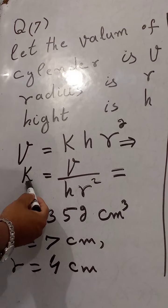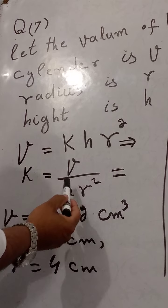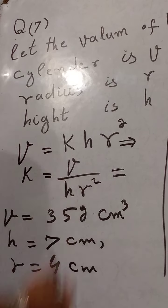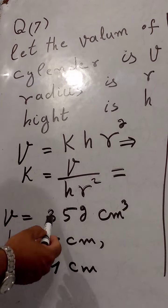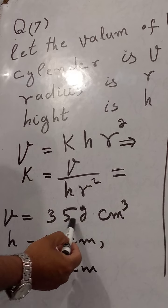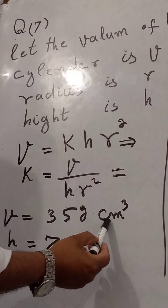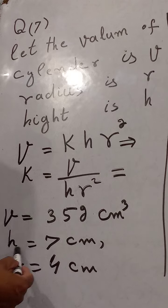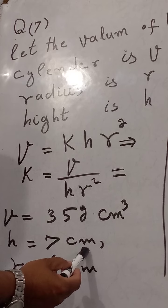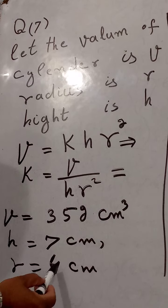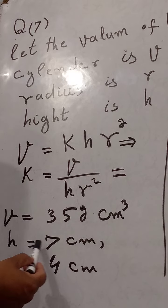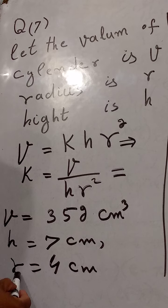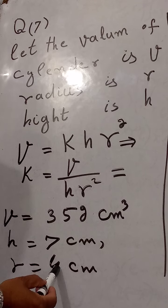From this, K is equal to V divided by H R square. Volume is given which is 352 cm cube and height is given which is 7 cm, and radius of cylinder is 4 cm.